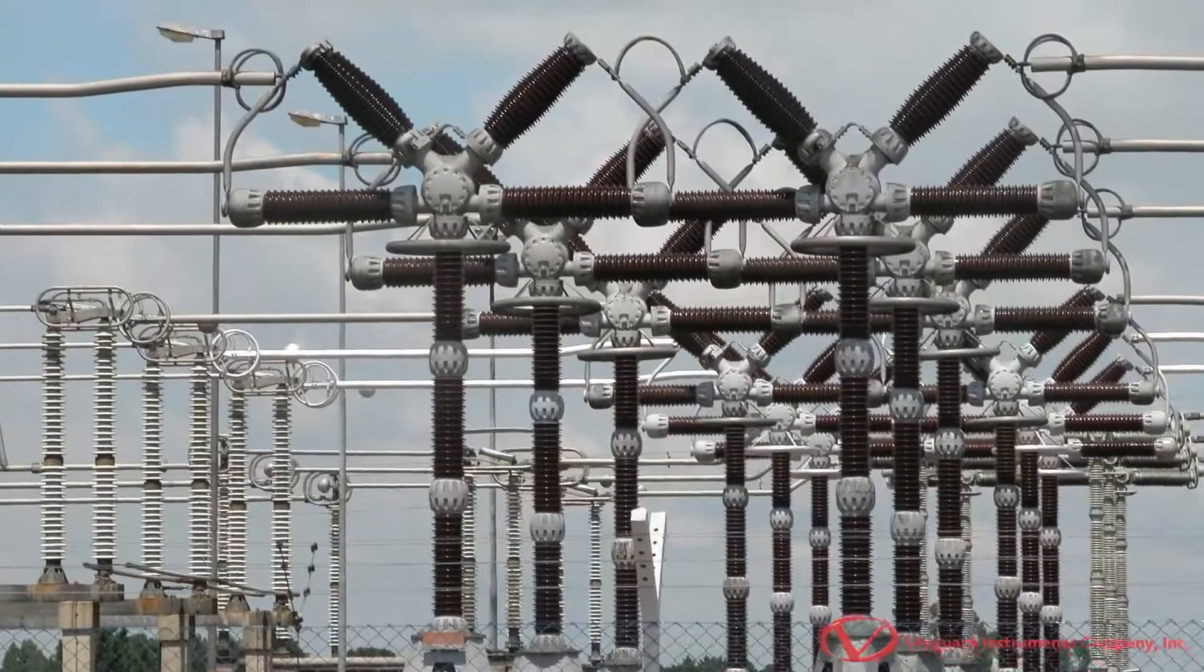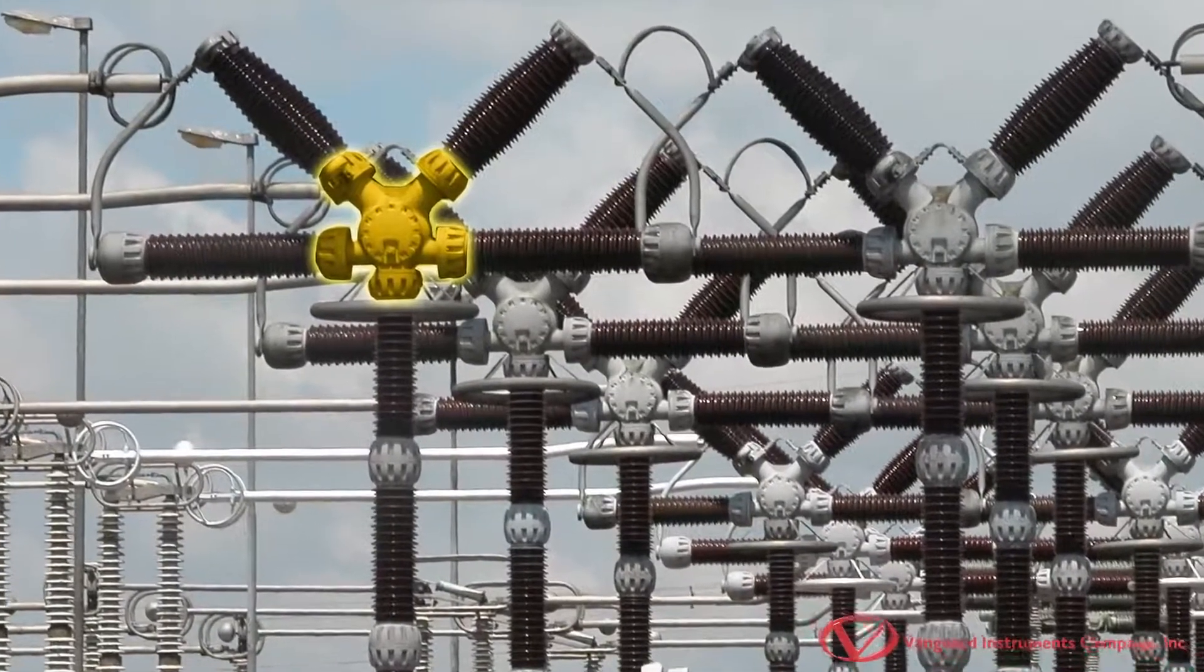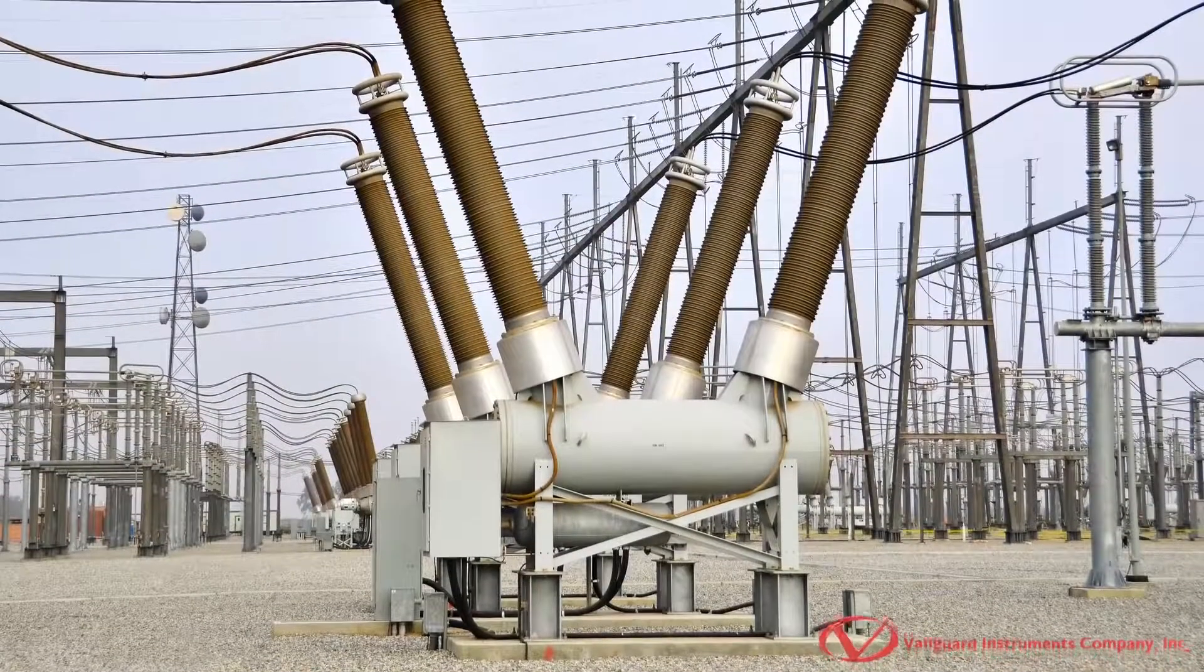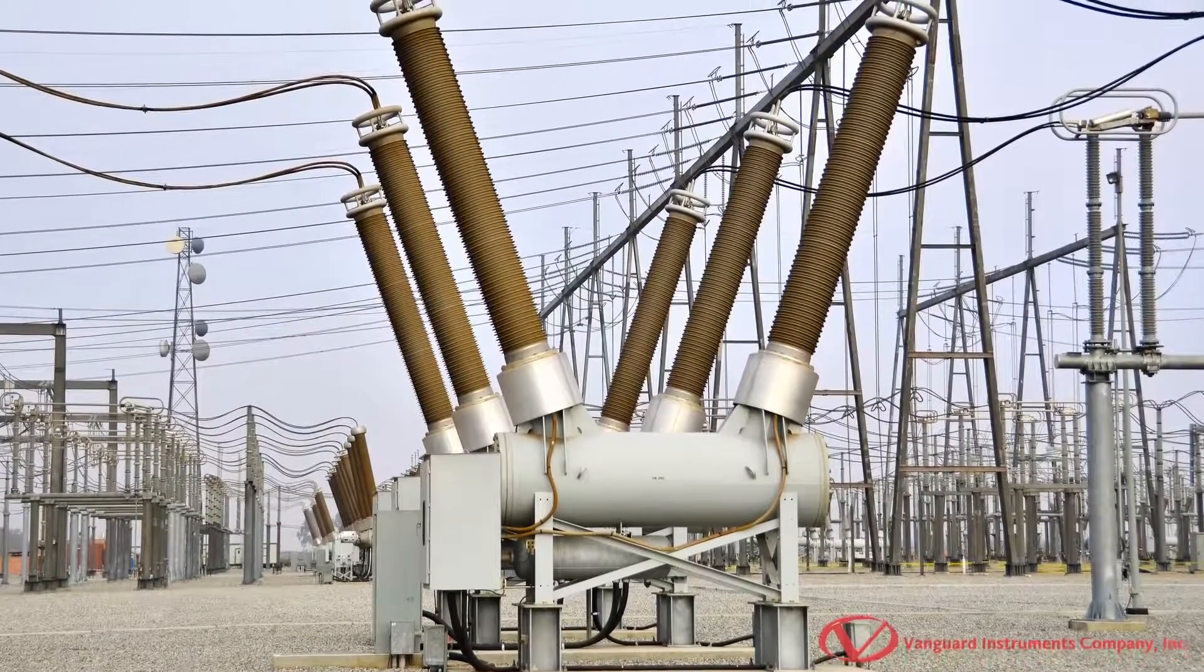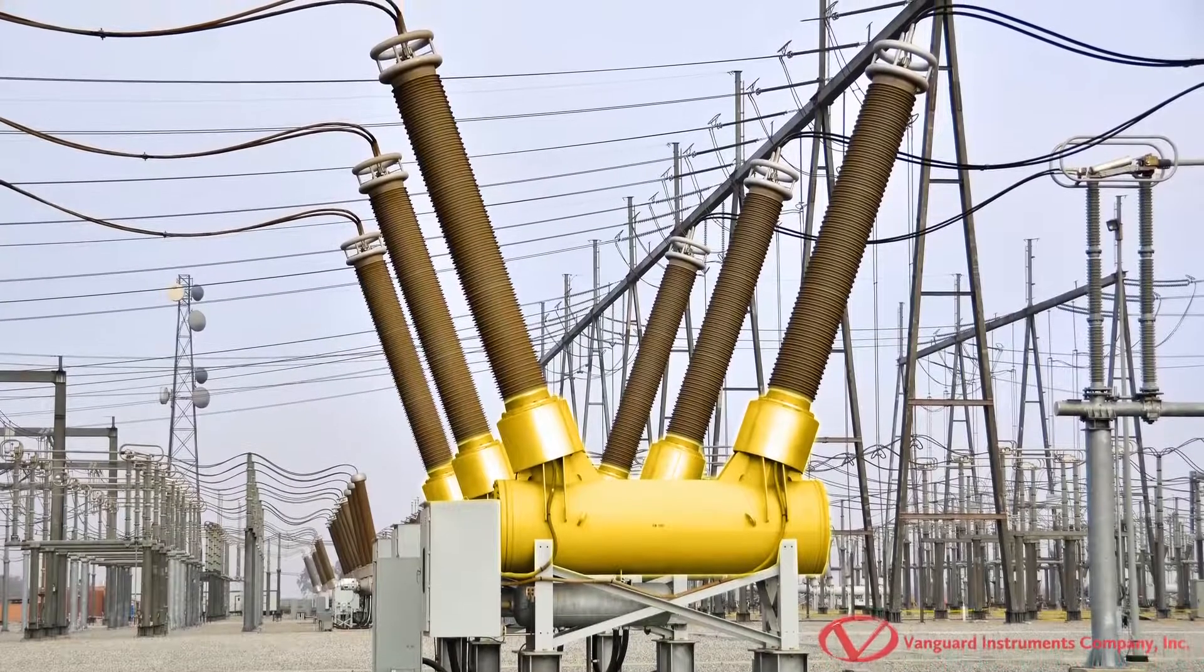Live tank breakers use a switching device in which the vessel housing the interrupter is at a potential above ground. Dead tank breakers use a switching device in which a vessel at ground potential surrounds and contains the interrupter and the insulating media.